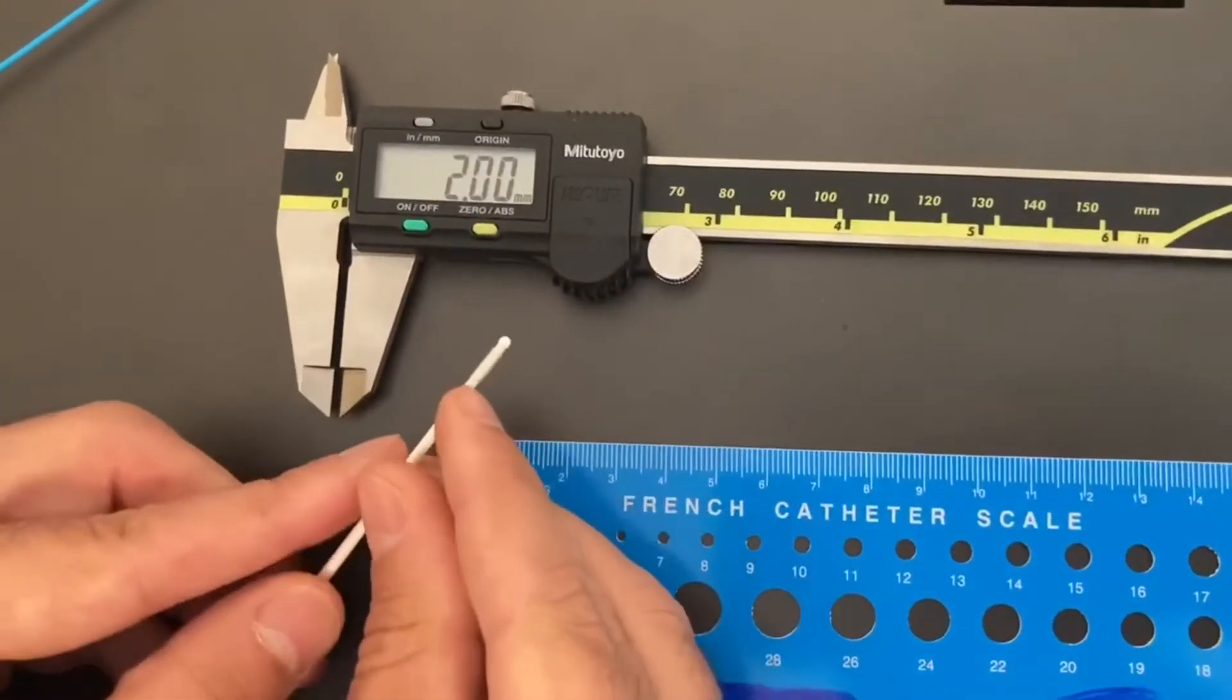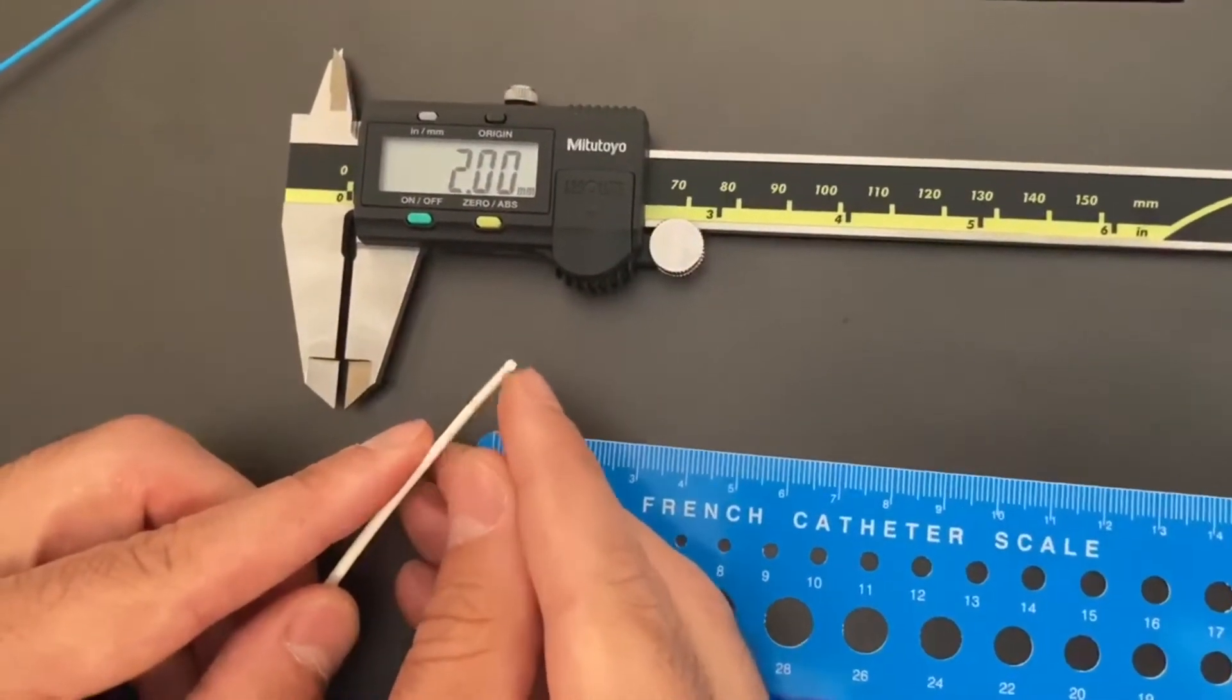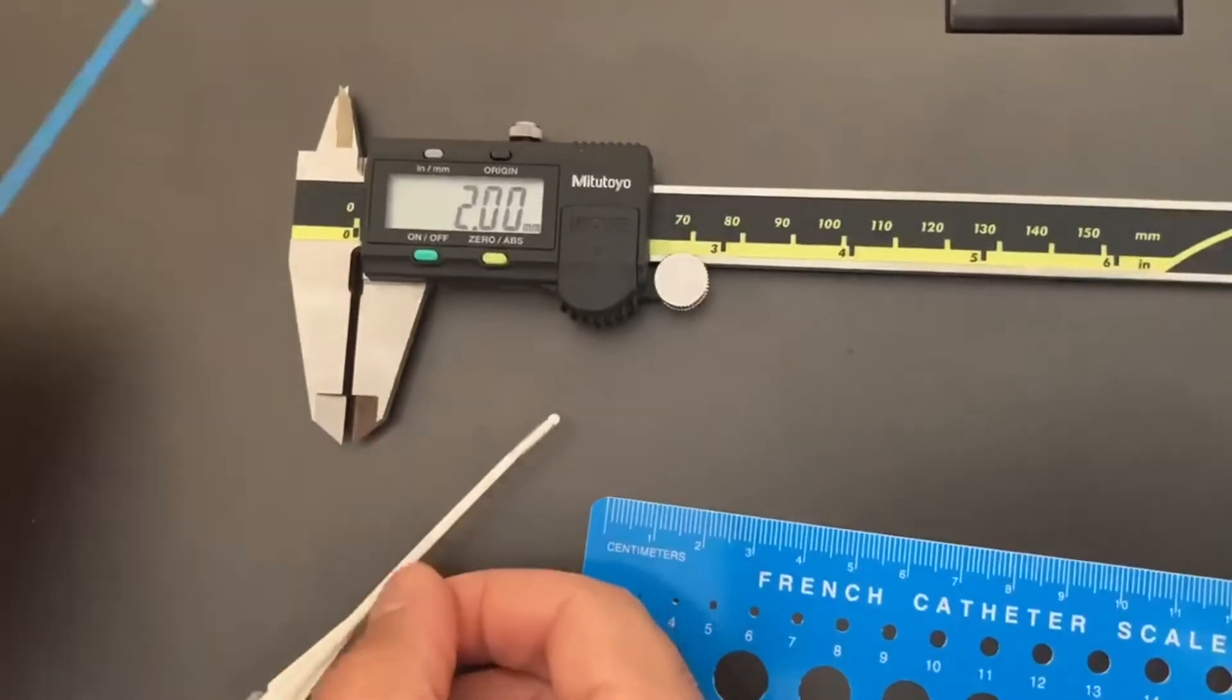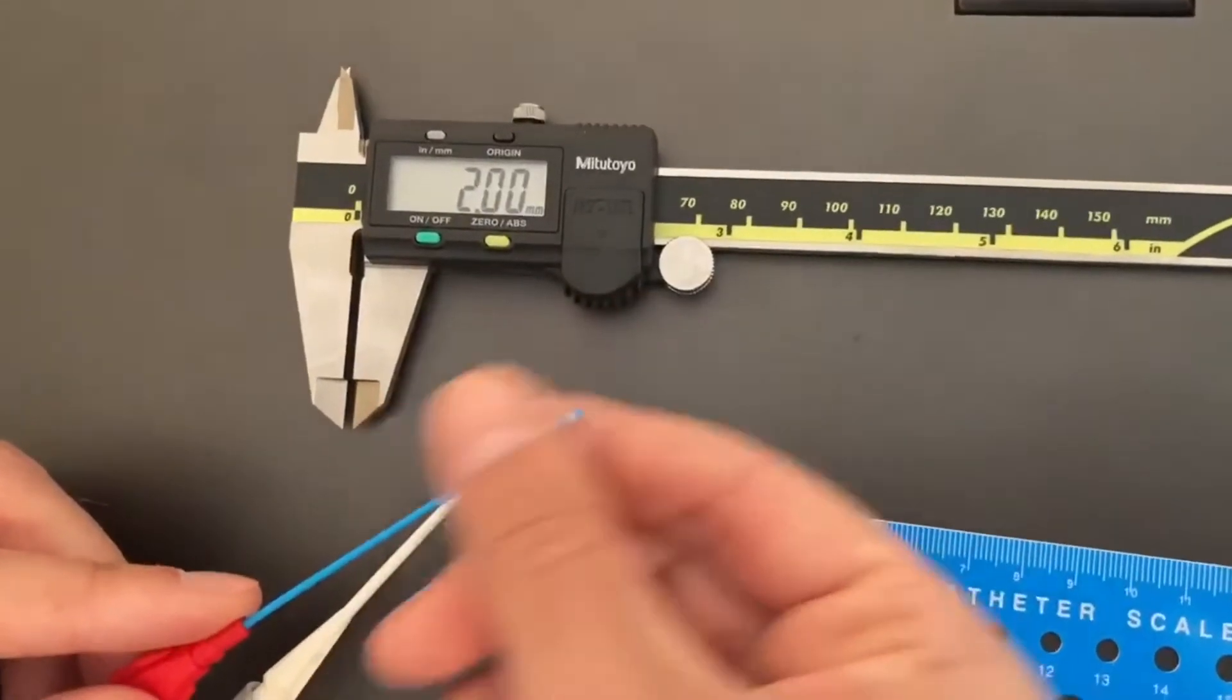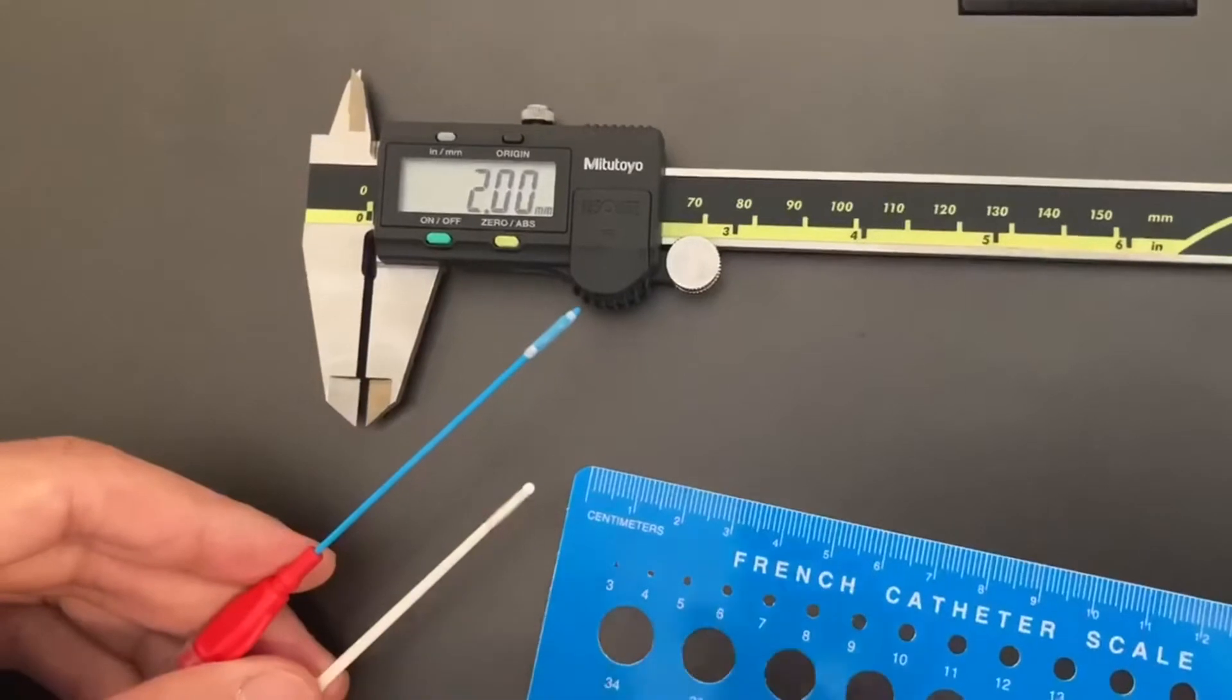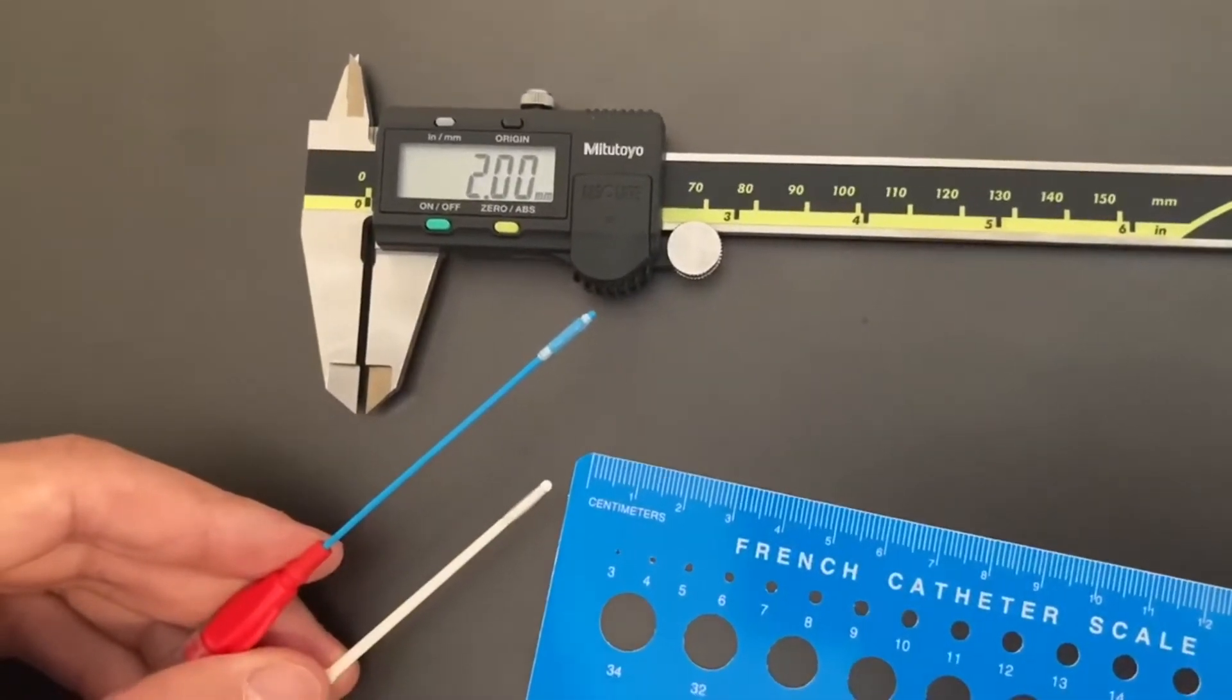Now the competitor also includes these two recessed areas on the catheter tip maybe to reduce the total width created by the string that ties the balloon in place. But in practice it feels no smoother than the balloon extractor which we carefully hand tied kind of like you would a fly fishing lure.